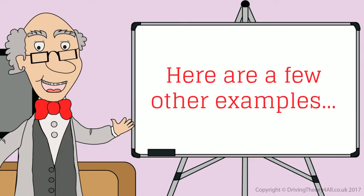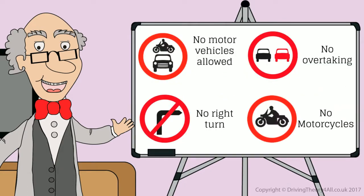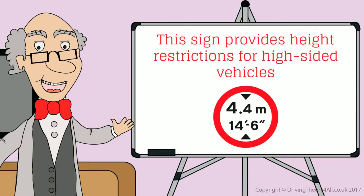Here are a few other examples: no motor vehicles allowed, no overtaking, no right turn, no motorcycles. This sign provides height restrictions for high-sided vehicles.